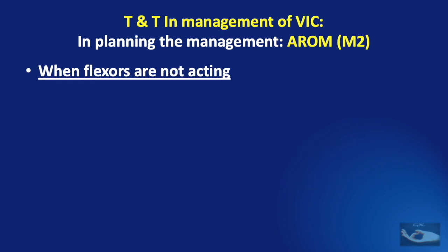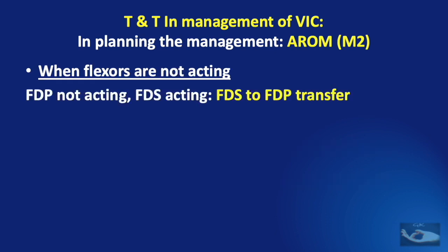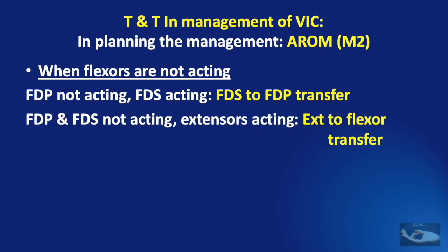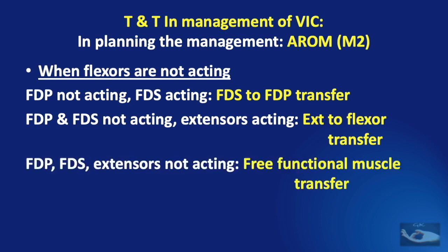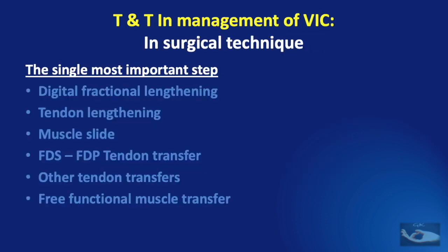However, when the flexors are not acting, it could be the FDP alone not acting while the FDS is acting, as in cases of type 1 long-standing VIC, and in these patients an FDS to FDP transfer can be planned. In cases where both the FDP and FDS are not acting but the extensors are acting, an extensor to flexor transfer can be planned. And in severe cases where the FDP, FDS, and extensors are not acting, a free functional muscle transfer will be required.